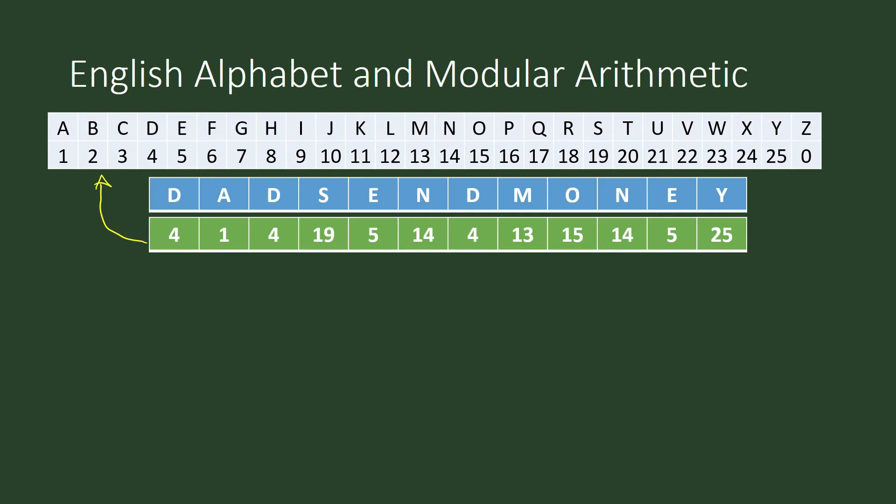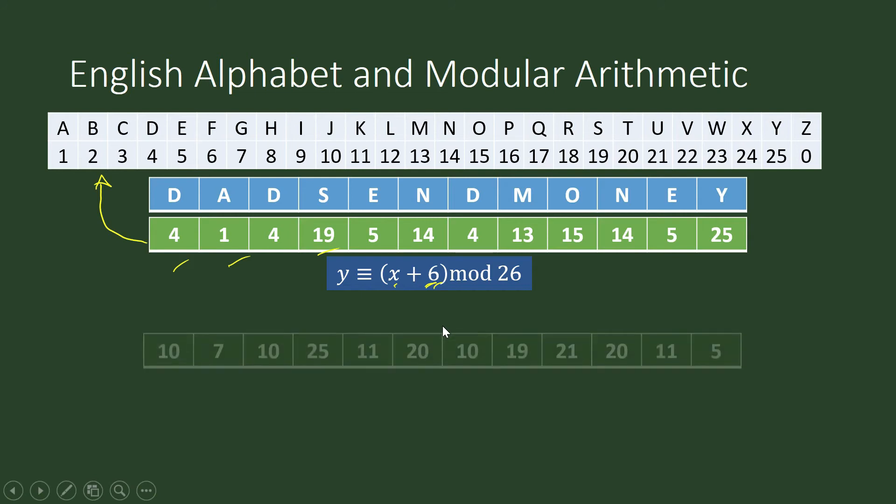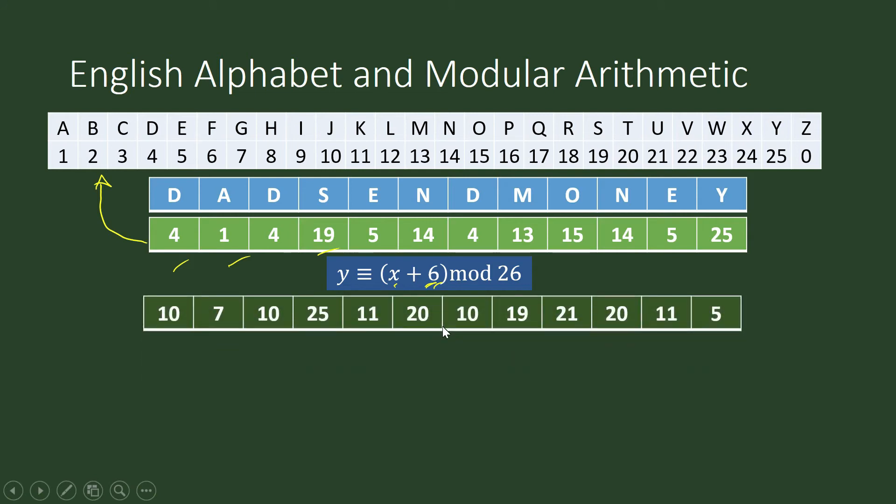4 plus 6, look at that, 4 plus 6 is 10, 1 plus 6 is 7, 19 plus 6 is 25, and the resulting string of integers is going to be this one. And then again, you will go back to the table to produce the ciphertext. This now is the ciphertext.